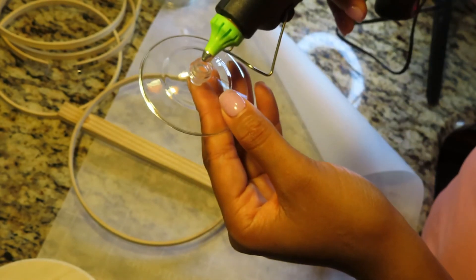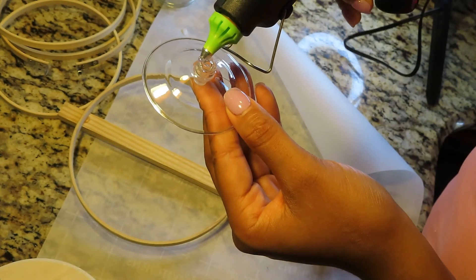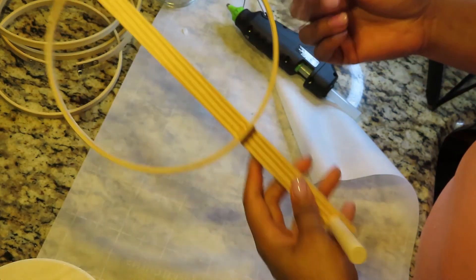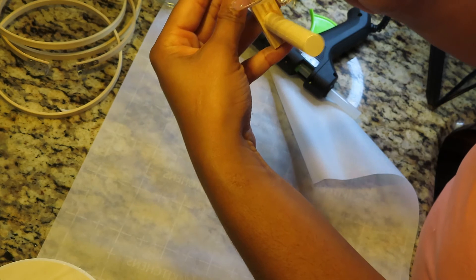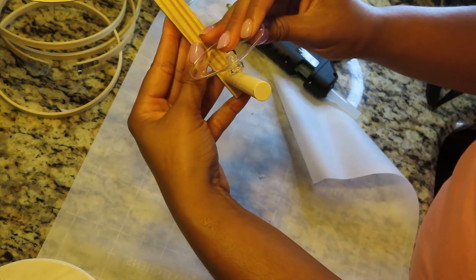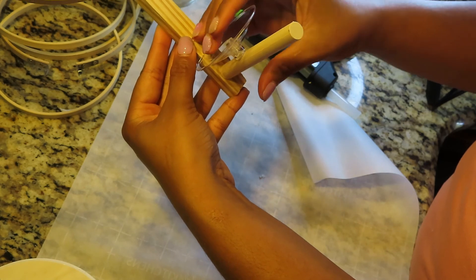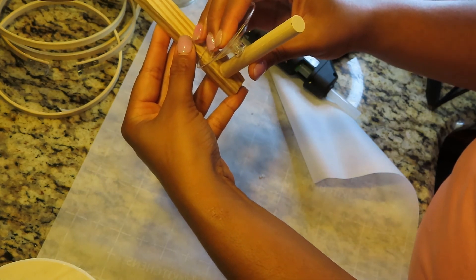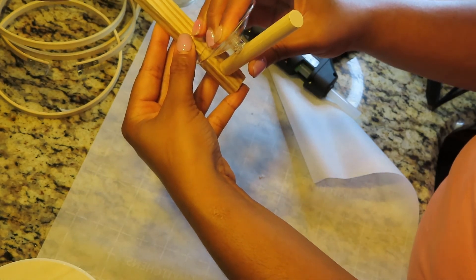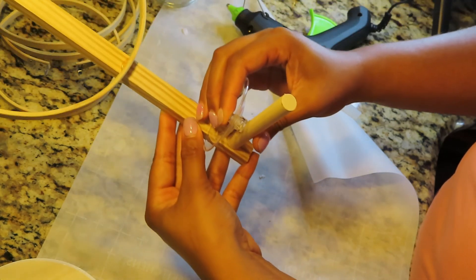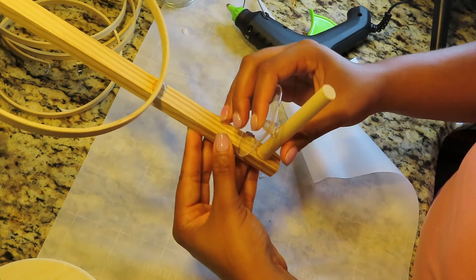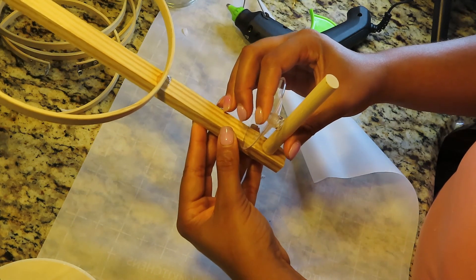I took my hot glue gun and placed it on the top of the flute base and attached it to the top of that foam brush backing. Once that dries, I will then take it out for painting as well.